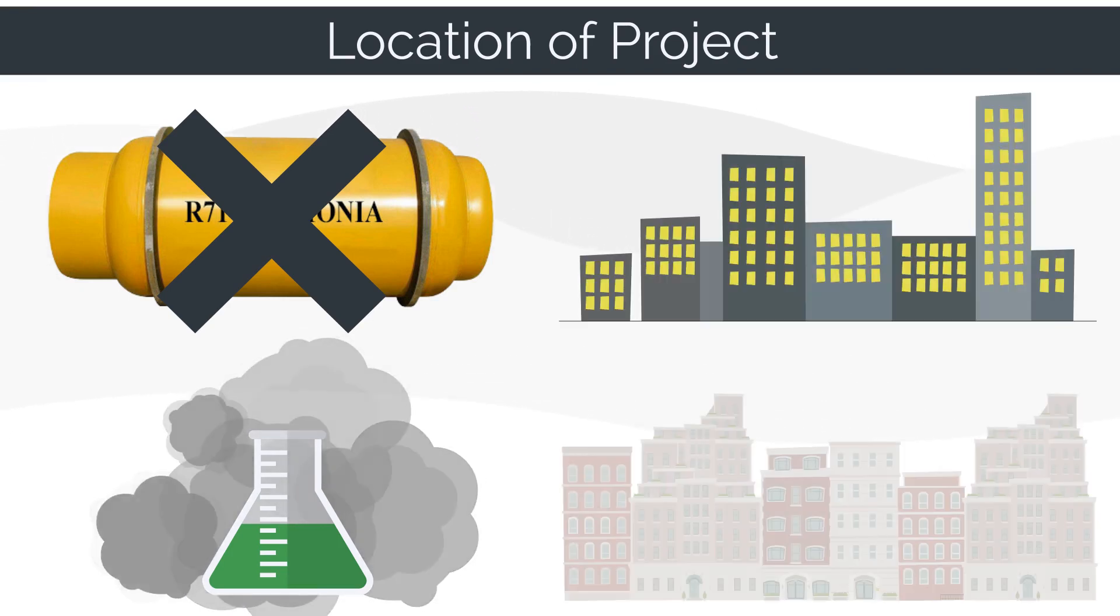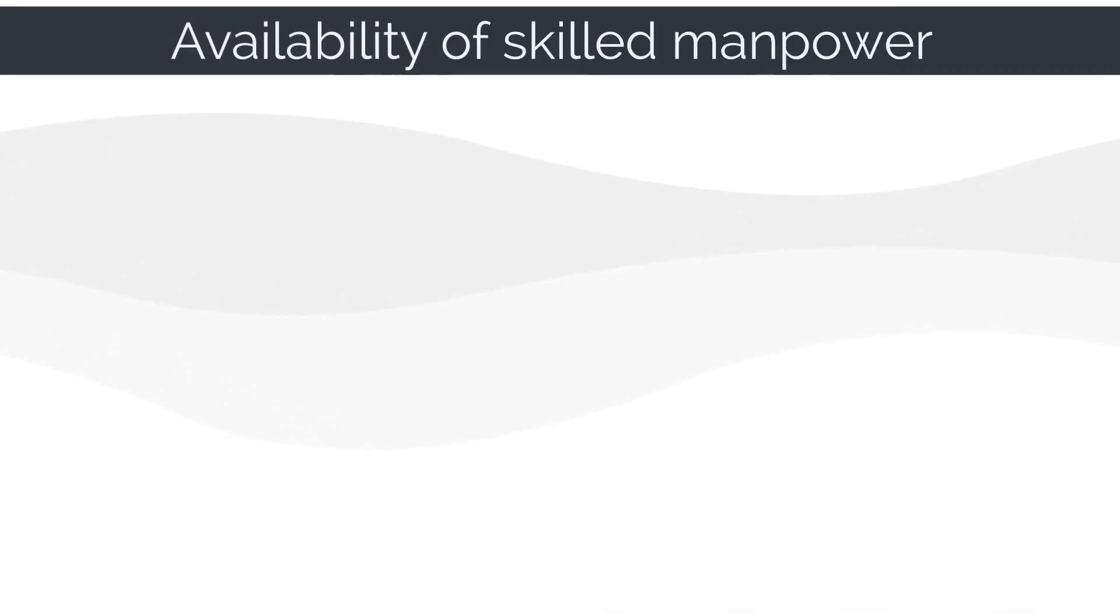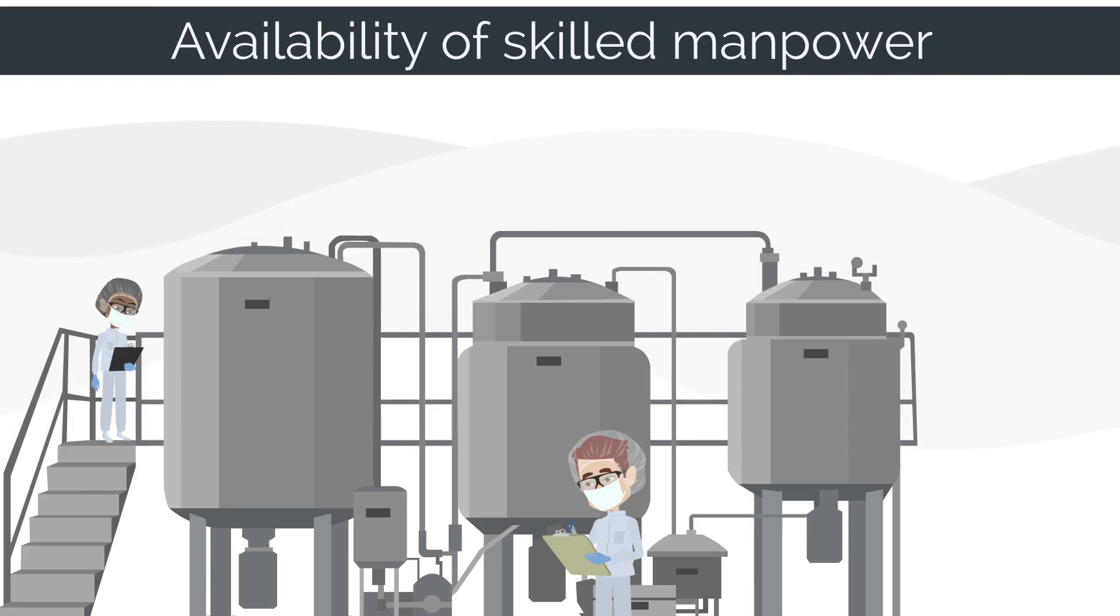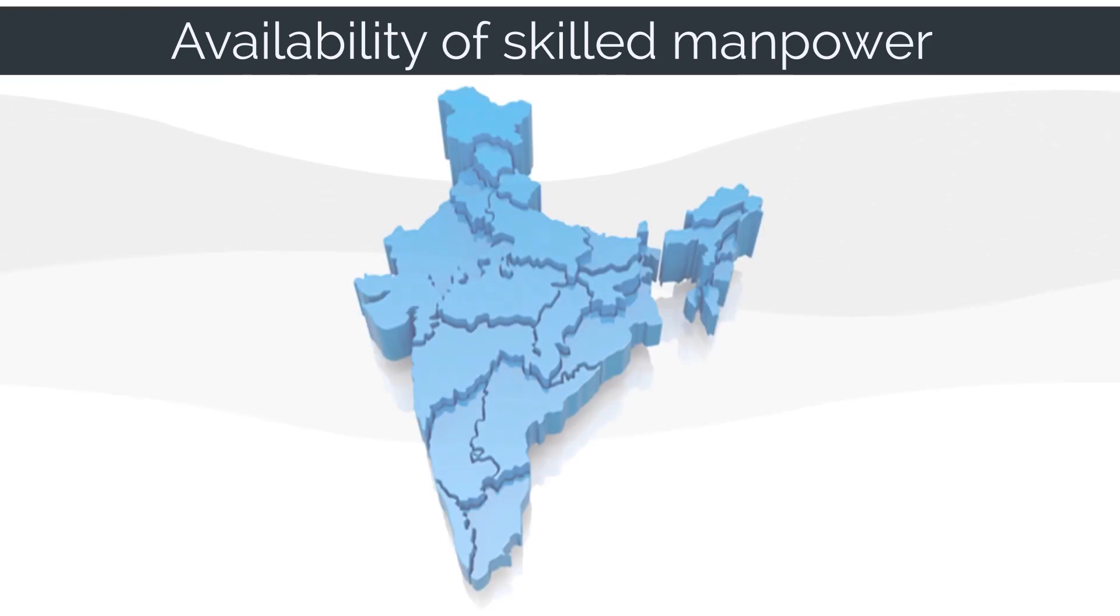3. Availability of skilled manpower. This is another important factor which people ignore when deciding the type of refrigeration system they should consider. Many small places and regions in India have skilled manpower to handle these systems that have expertise in only one type of these systems.